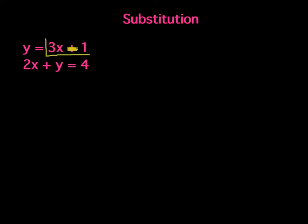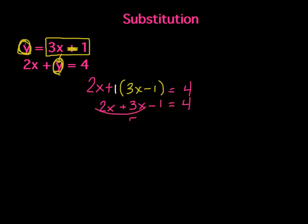When I have a variable by itself, y and 3x minus 1 are equal, so I can substitute that in for the y. Typically, you substitute in with parentheses. There's a 1 outside this, so that's why I didn't need to do parentheses here. I'm going to combine like terms and add the 1 and divide by 5. I get x equals 1.